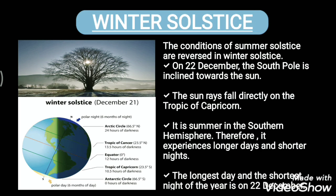On 22nd of December, the South Pole is inclined towards the Sun, and the Sun rays fall directly on the Tropic of Capricorn, which is in the southern hemisphere. Because of this, it is summer in the southern hemisphere, which experiences longer days and shorter nights. The longest day and the shortest night of the year in the southern hemisphere occur on 22nd of December.